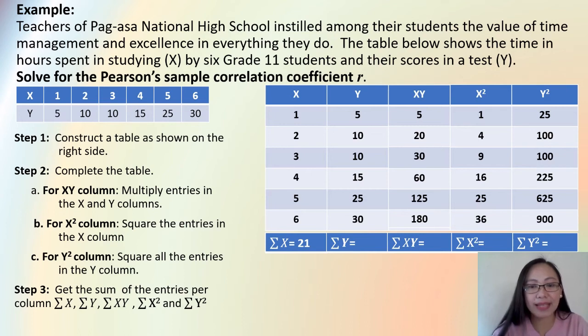And then for the XY column, the summation of XY, we have 5 plus 20 plus 30 plus 60 plus 125 plus 180. You will have 420. And then we proceed to the X squared column. We have 1 plus 4 plus 9 plus 16 plus 25 plus 36. That gives you 91. And for the last column, we have 25 plus 100 plus 100 plus 225 plus 625 plus 900. That gives you 1,975.